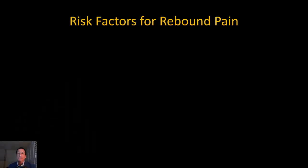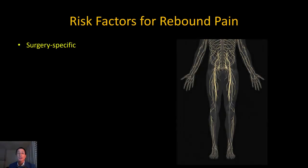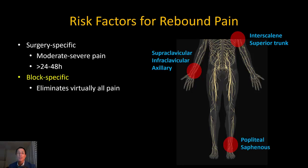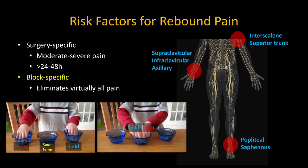Does everybody get rebound pain? The obvious answer is no, because for one, it is surgery specific. The studies of rebound pain tend to involve shoulder, distal upper limb, or foot and ankle surgery. It's not just because these are associated with moderate to severe postoperative pain for at least 24 to 40 hours — a bigger consideration is that they are surgeries in which the regional anesthetic technique of choice is capable of completely eliminating all perioperative pain. Patients may thus receive little to no systemic analgesics until the block wears off, and when it does wear off, the contrast effect bias is maximized.